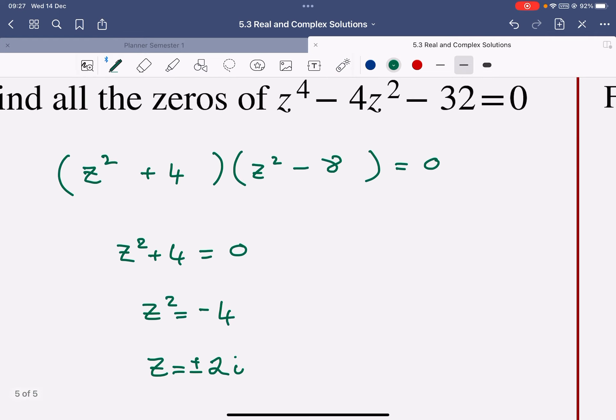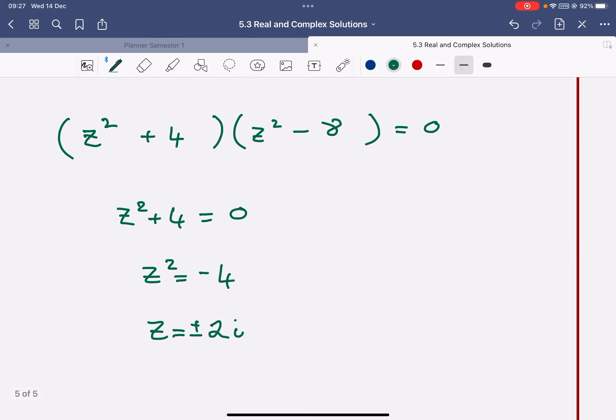Now, because it's z to the power of 4 at the start, there are four solutions. The others are just going to come from that other bracket. And these should be much more straightforward. So z squared equals 8. So z is the square root of 8, and so z is plus or minus 2 root 2.